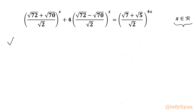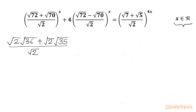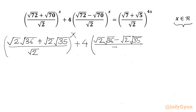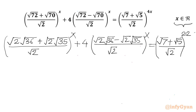We can factor 72 as 2 times 36, so I will write √2 times √36. And 70 can be factorized as 2 times 35, so √2 times √35, divided by √2, whole power x. In the second term we apply the same: √2 times √36 minus √2 times √35, divided by √2, whole power x. Now we can cancel √2 from numerator and denominator in the LHS.